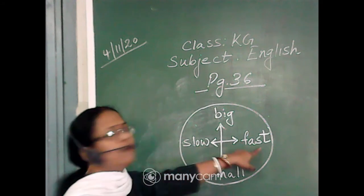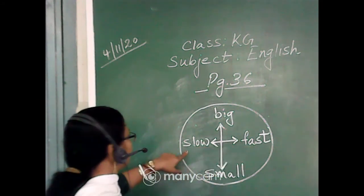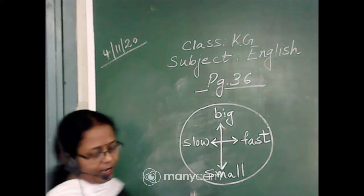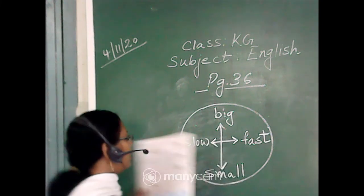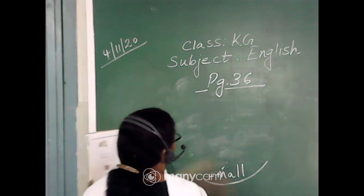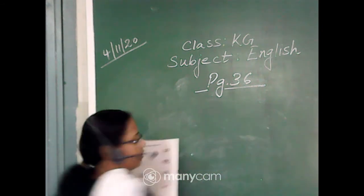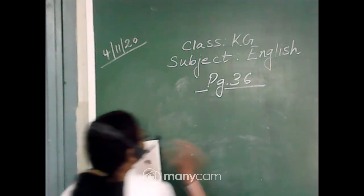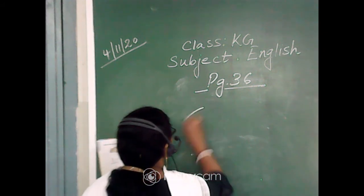Slow, fast. Fast, slow. Okay? Very nice. Now let us go for the next one. That is last circle. And the last circle is here.